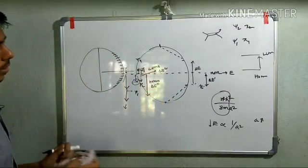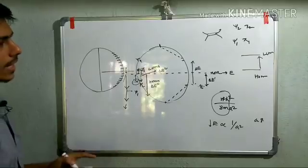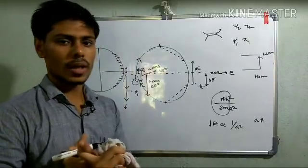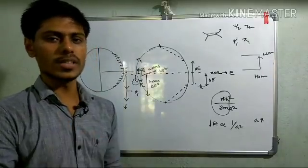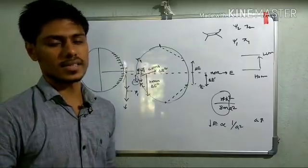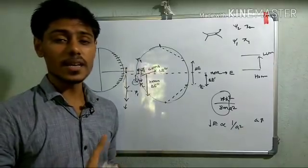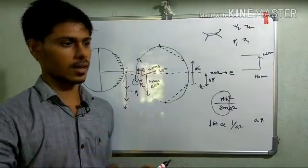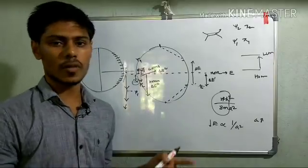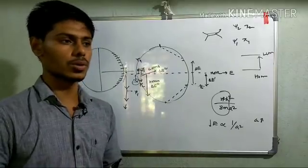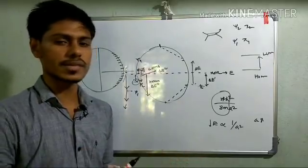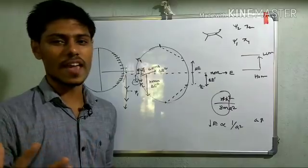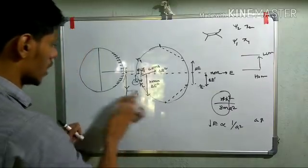As the conjugation increases, two important things happen: the energy of the HOMO increases and the energy of the LUMO decreases. This is a very important conclusion, because at a later stage when we discuss chemical reactions, we will see how conjugation affects the reactivity of a particular molecule.